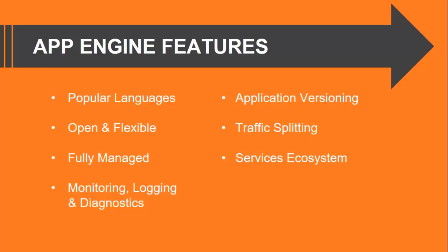Next you have traffic splitting, which routes incoming requests to different application versions — what we can call A/B testing — and enables incremental feature rollout. It also provides a service ecosystem feature, where you can tap into the growing ecosystem of GCP services from your application, including an excellent suite of Google developer tools.